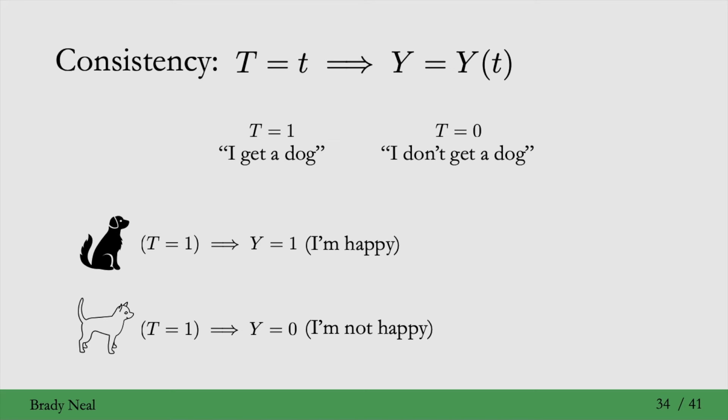In some sense, this means that the potential outcome, Y(1), is not well defined. This is because I'm observing a different potential outcome, Y(1), depending on exactly how I get T equals 1. This is an example of a violation of the consistency assumption.